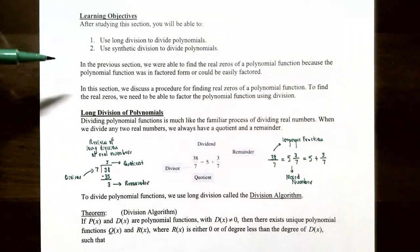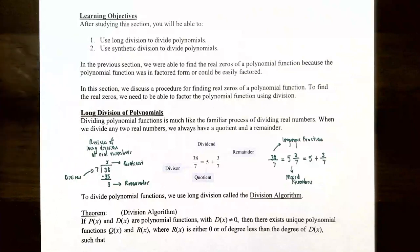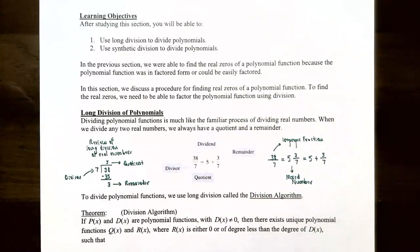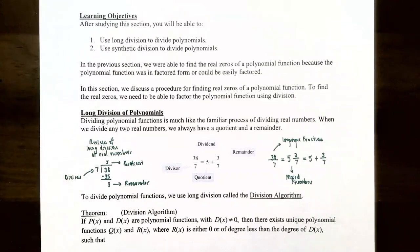In the previous videos we've talked about how to find the real zeros of a polynomial function, which are very important because they help us find where the x-intercepts are for the graph of a polynomial function. In this section we're going to discuss a procedure for finding real zeros of a polynomial function using division.